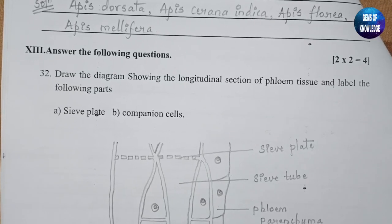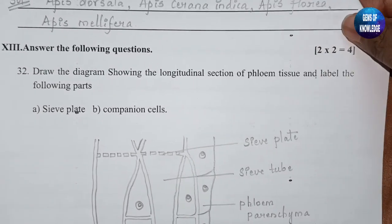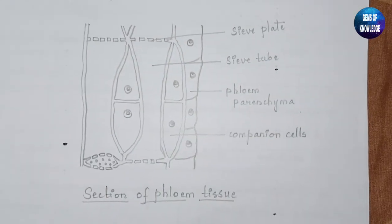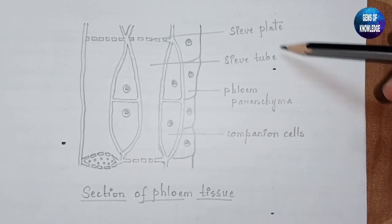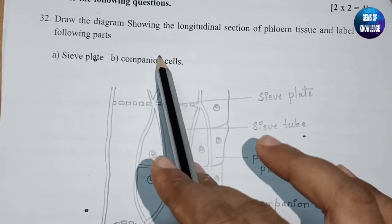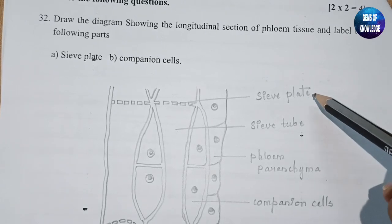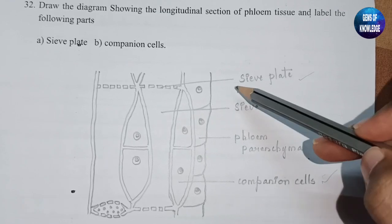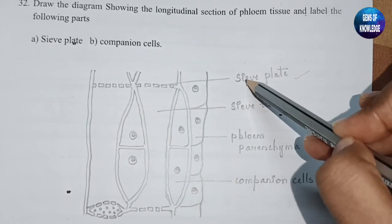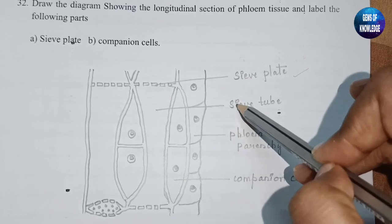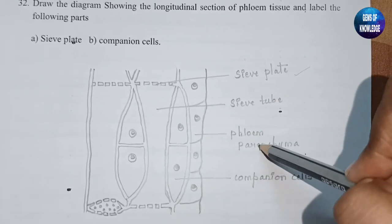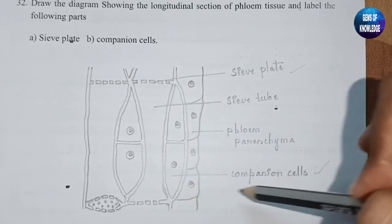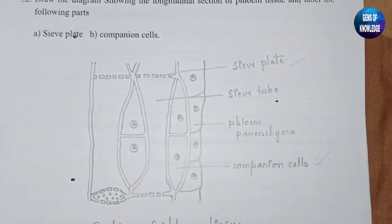The next question: draw the diagram showing the longitudinal section of phloem tissue and label the following parts. In the phloem tissue diagram, you need to show the sieve plate — the plate-like structures are called sieve plates — then the sieve tube, phloem parenchyma, and the cells here are known as companion cells.